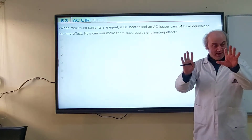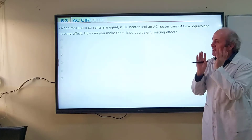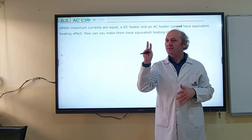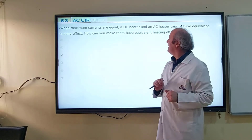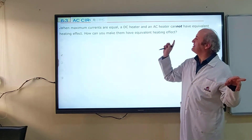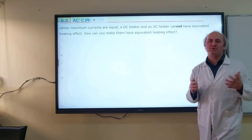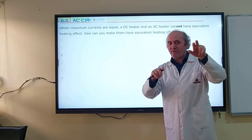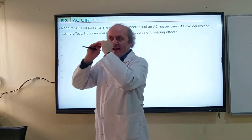When maximum curves are equal, a DC heater and an AC heater cannot have equivalent heating effect. DC is twice the AC; AC is half of DC. How can you make them have equal heating effect? By increasing the current of AC. That's the point — you should increase the current of AC.